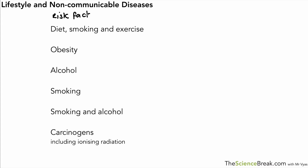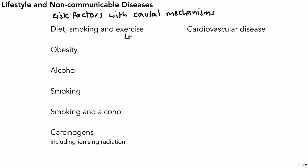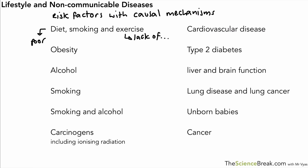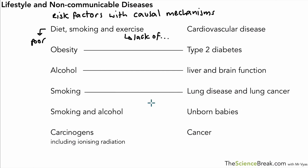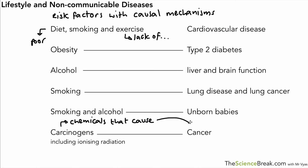There's a lot of information about the risk factors listed on screen, and we have causal mechanisms for all of them. Diet, smoking, and lack of exercise are linked to cardiovascular disease. Obesity is linked with type 2 diabetes; alcohol with liver and brain function; smoking with lung disease and cancer. Smoking and alcohol are also linked with problems for unborn babies. Carcinogens — chemicals that can cause mutations in DNA — have a causal relationship with cancer, as those mutations can lead to cancer.